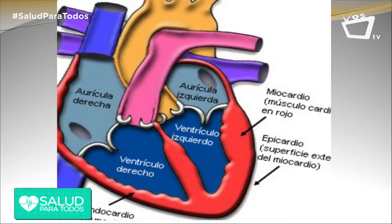Comencemos entonces hablando un poquito de la fiebre reumática. ¿Qué es y cómo se presenta en el corazoncito de los niños? La fiebre reumática es una enfermedad que afecta a los niños entre los cinco y los quince años de edad, básicamente. Es posterior a una afectación de la garganta — las amigdalitis, la faringitis o la faringoamigdalitis, que es bastante común en los niños. Es causada por un germen que se llama estreptococo, y si el niño es susceptible de contraer la enfermedad, afecta el estado autoinmune del corazón a nivel del endocardio.